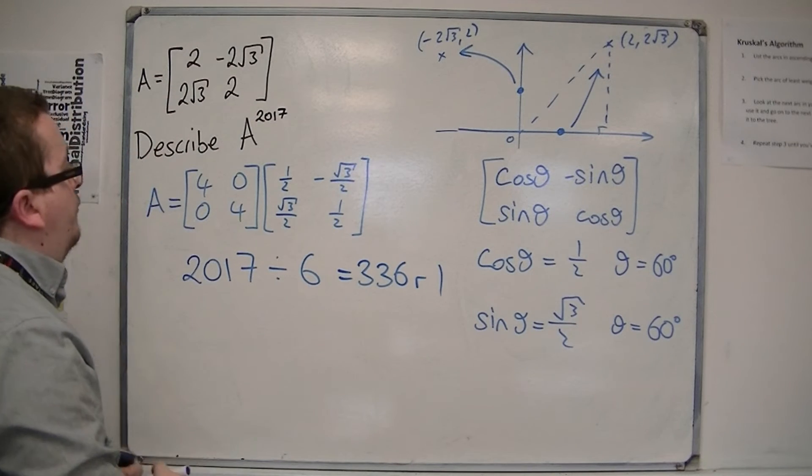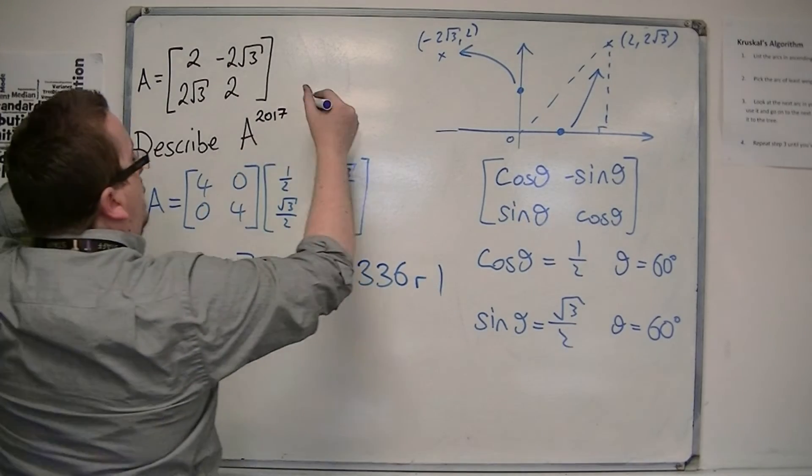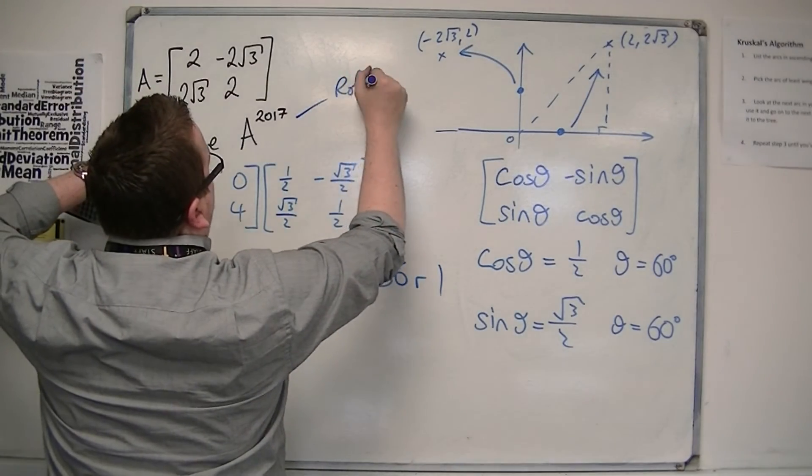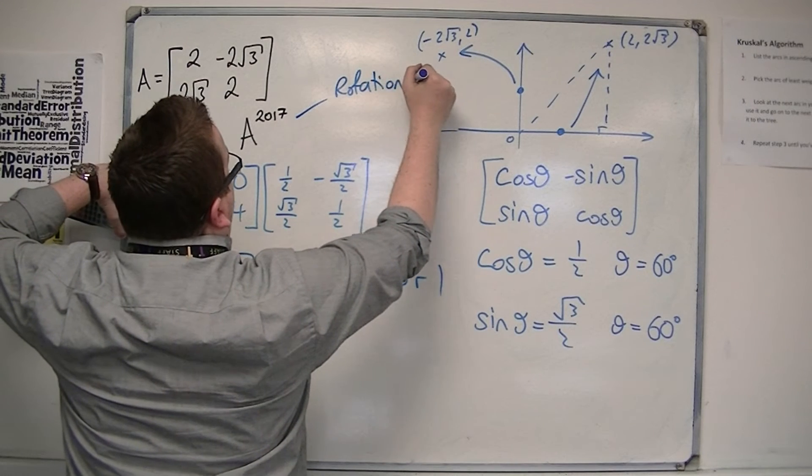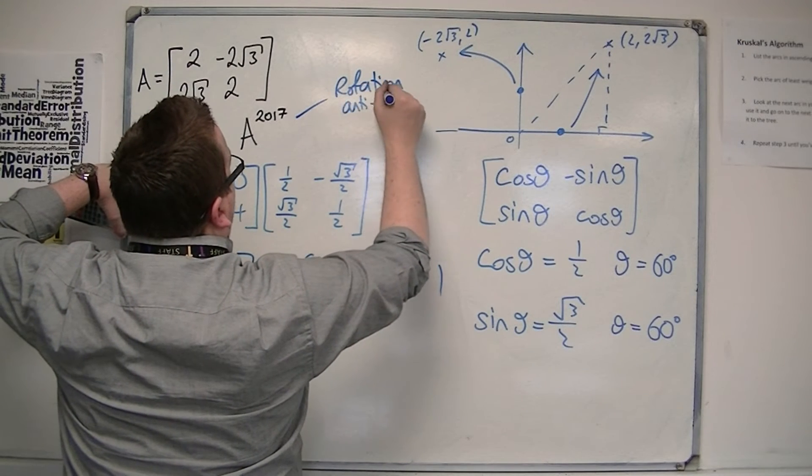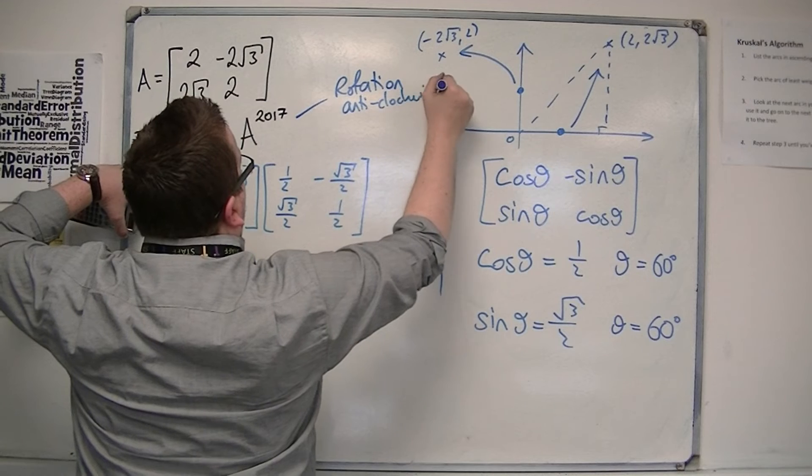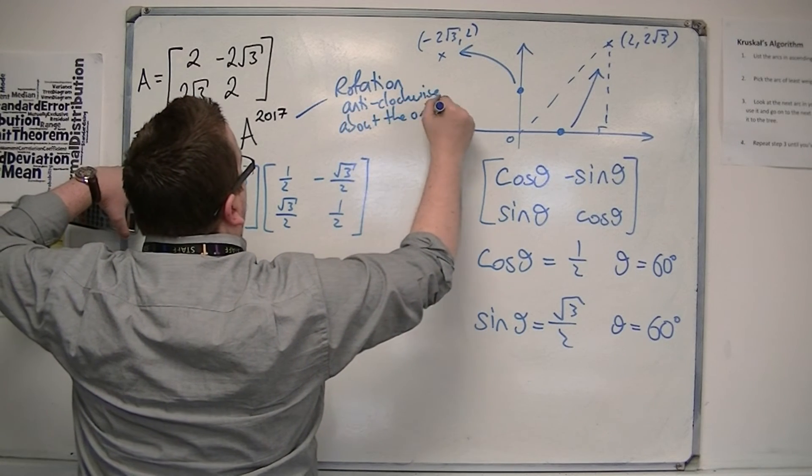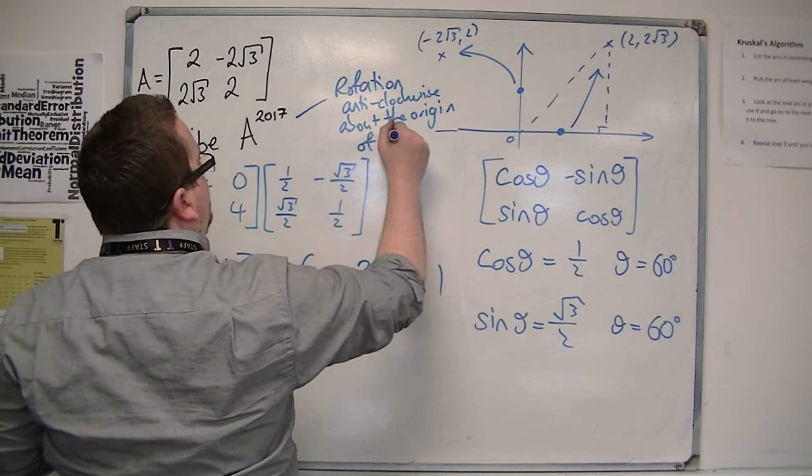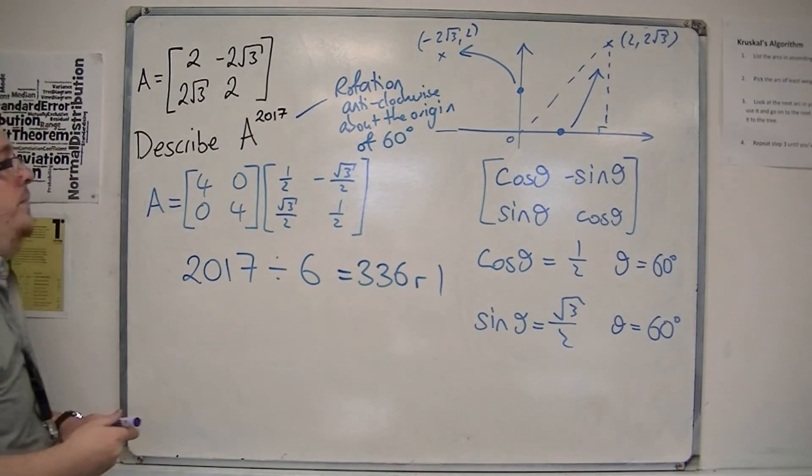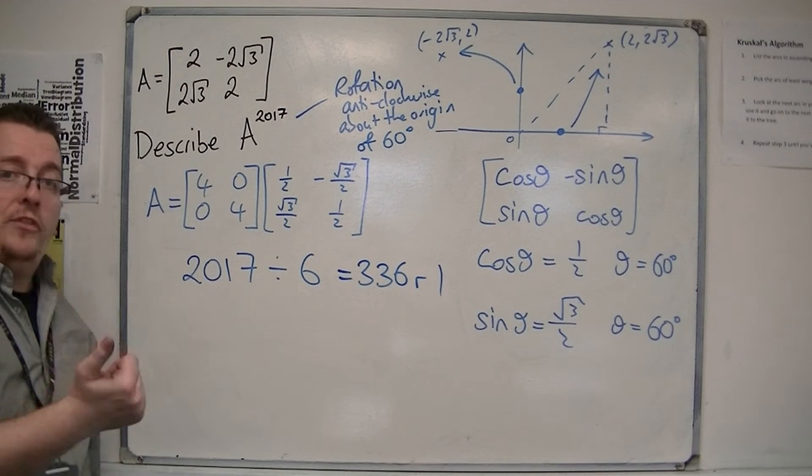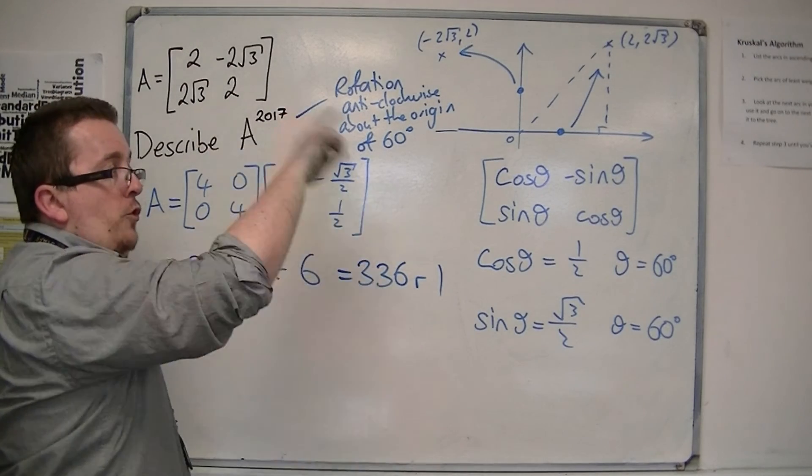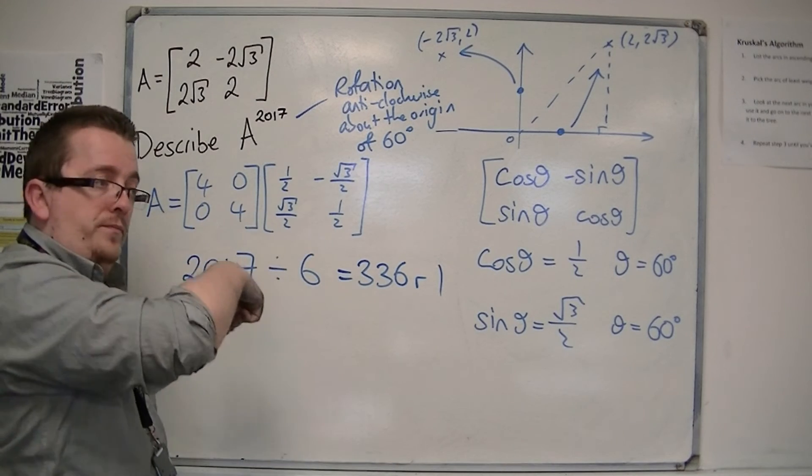So, in actual fact, this is including a rotation anticlockwise about the origin of 60 degrees. So, that's the rotation that happens, because all the other ones can be ignored, because I've gone round and round the circle.